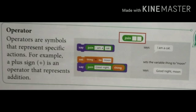Now, what are operators? Operators are symbols that represent specific actions. For example, a plus sign is an operator that represents addition. Here, an example is also given. Say, join, I am a. And then another block, it is written cat. So the output is, says, I am a cat.